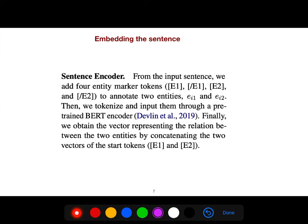And for sentence encoder, from the input sentence, we add four entity marker tokens to annotate two entities. Then we tokenize and input them through a pre-trained BERT encoder. Finally, we obtain a vector representation, the relation between the two entities, by concatenating the two vectors of the star tokens.